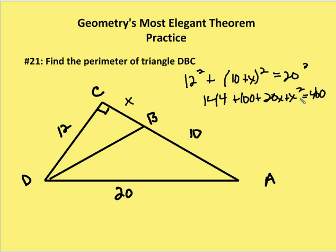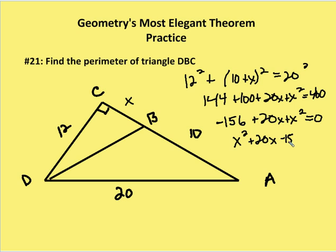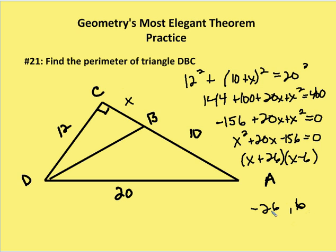I have 244 on the left side and 400 on the right. Subtracting 400 from 244 gives negative 156, so 20X plus X squared minus 156 equals zero. Rewriting: X squared plus 20X minus 156 equals zero. I want the factors of negative 156 that add to 20, which gives me (X + 26)(X - 6). So X equals either negative 26 or 6. Since X is a length, X cannot be negative.